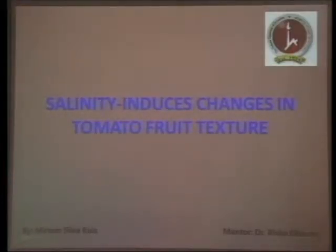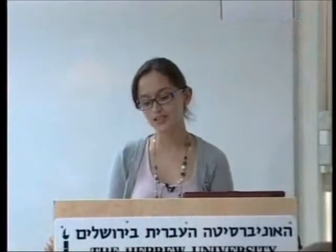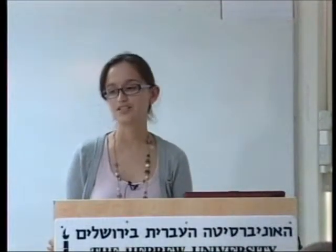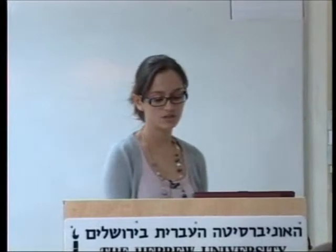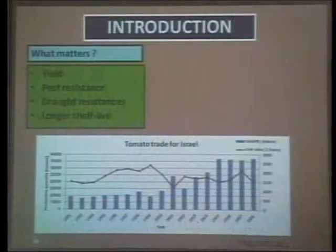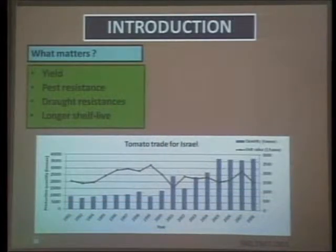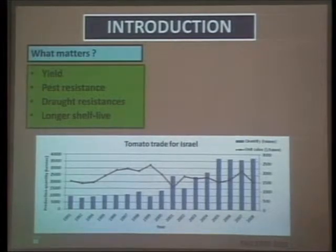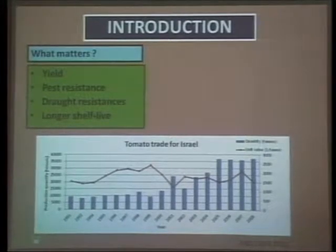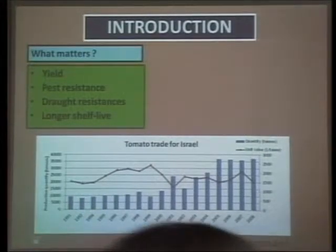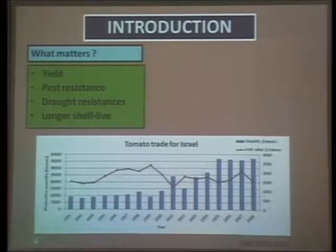Hi, good afternoon. My name is Miriam and I'm from Mexico. The person that guided me through this research exercise is Dr. Rivka Elvano. Our research intends to explain that salinity induces changes in tomato fruit texture. Tomato is a cash crop for Israel and all around the world, and the traits involved in improving this crop are mainly related to increasing yield, improving pest resistance, drug resistance, or increasing shelf life.